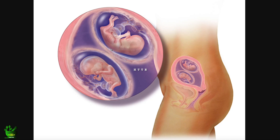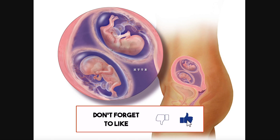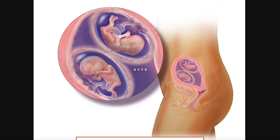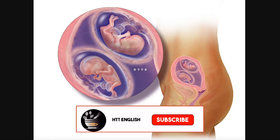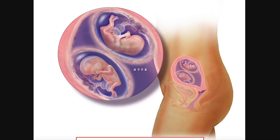So this is all about twins — how they are formed, the types of twins, and how they implant themselves in the uterus. Hope you liked this video. If you did, don't forget to give a thumbs up. If you're visiting the channel for the first time, consider subscribing and hit the bell icon so you never miss an update from Health Tricks and Tips in English. We'll catch up in another video on pregnancy — till then, peace out, stay happy, stay healthy.